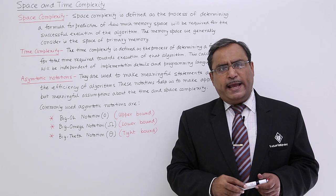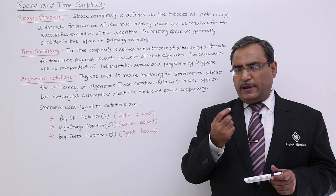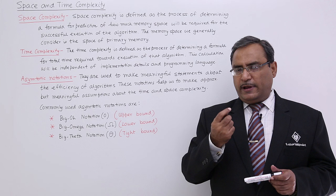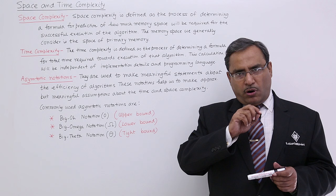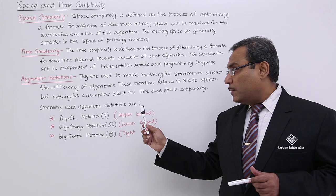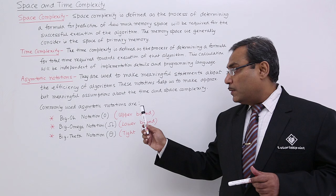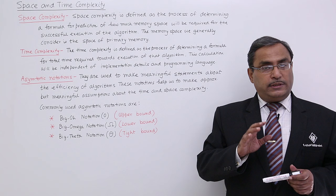Suppose we have n number of data and we are trying to search for one given item value within that set of data. What will be the minimum number of searches required? That is one — if we get the search item at the very first place, then we have successful completion of the searching. What is the maximum search required? We can find the data at the last, that is at the nth position, or after searching all n data, we find that the search item is not there. In that case, we did n searches — and that is the upper bound. The lower bound is 1. In case of tight bound, we can find the item at the (n+1)/2 position, so n/2 searches will be required if we get the data at the middle.